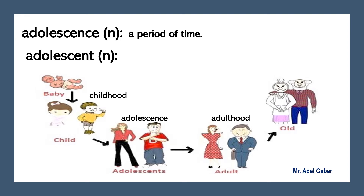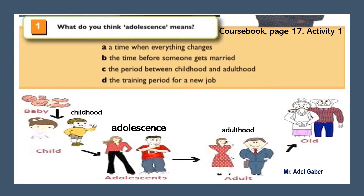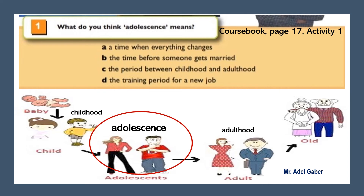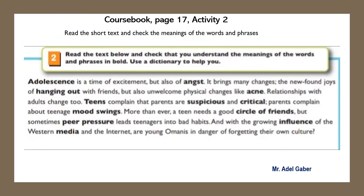What is the difference between 'adolescence' and 'adolescent'? They are both nouns, but 'adolescence' means a period of time, whereas 'adolescent' means a young person in that time period. Look at your course book page 17, Activity 1. What do you think 'adolescence' means? Adolescence: the period between childhood and adulthood.